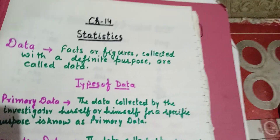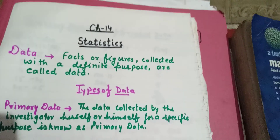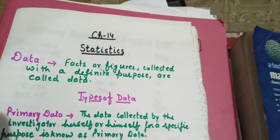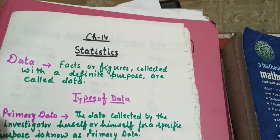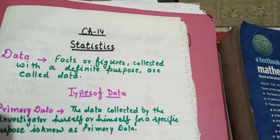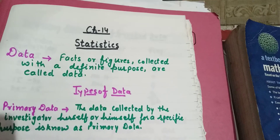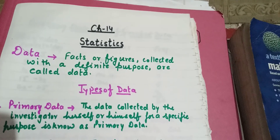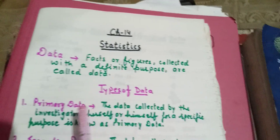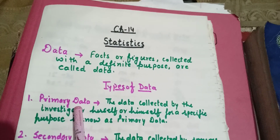For example, the marks obtained by a student for the whole year — at the end of the year you get your result. Now we have different types of data. The first type of data is primary data.